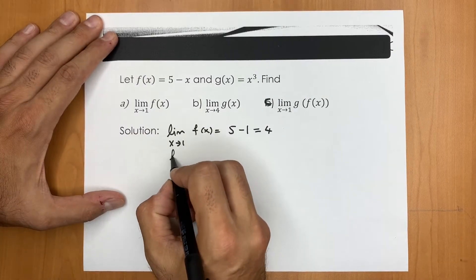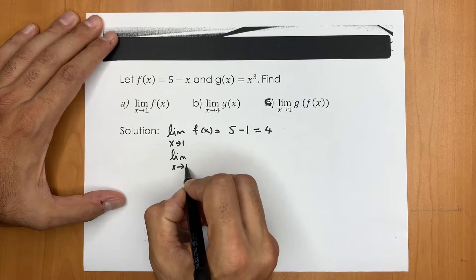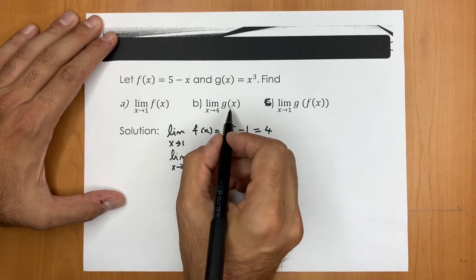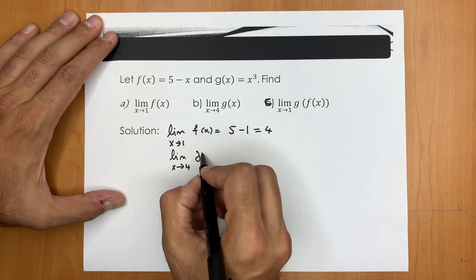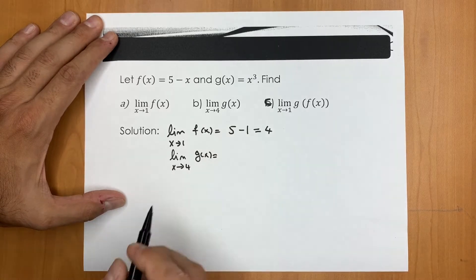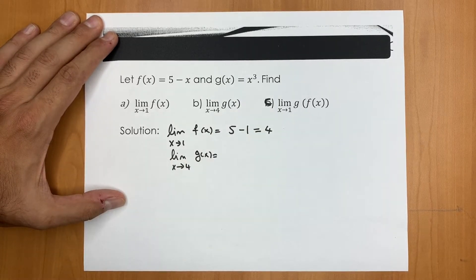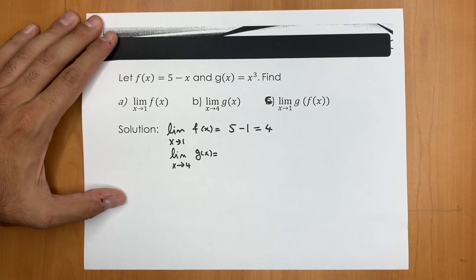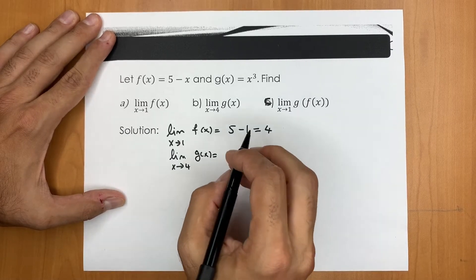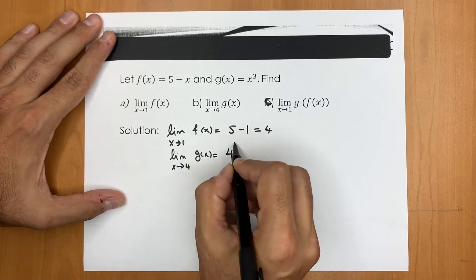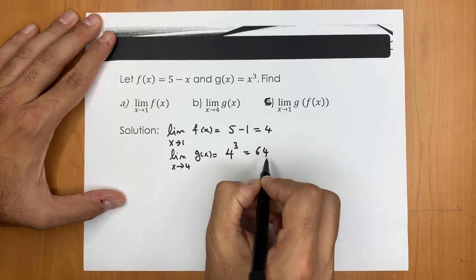So in part b, we are checking the limit of g of x, which is x cubed. And as I said before, x cubed is another polynomial, you can use direct substitution. So it's going to be four cubed, that is 64.